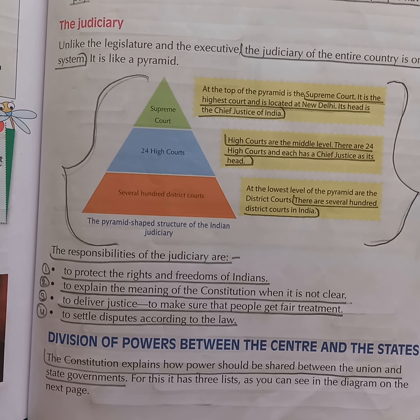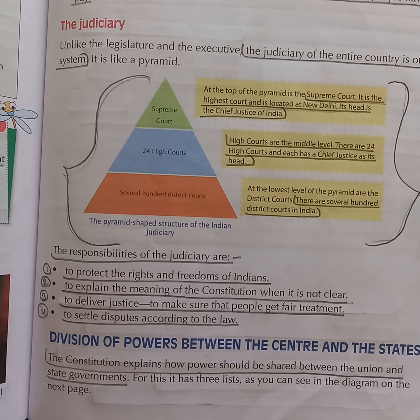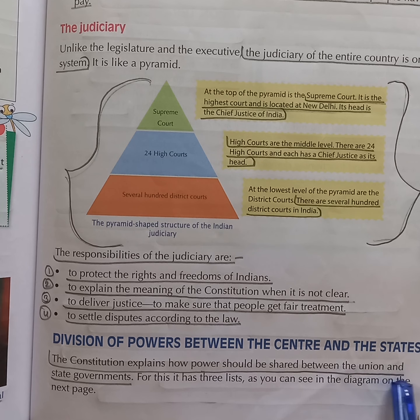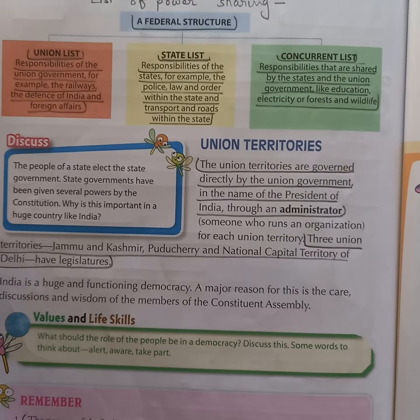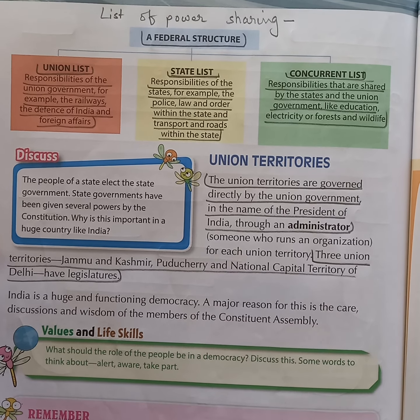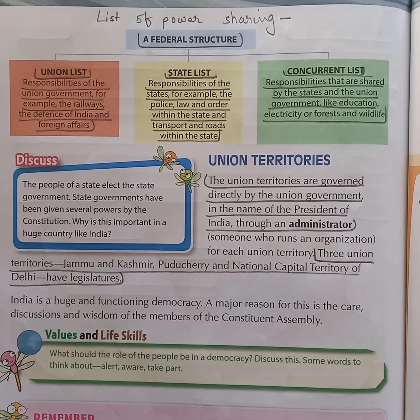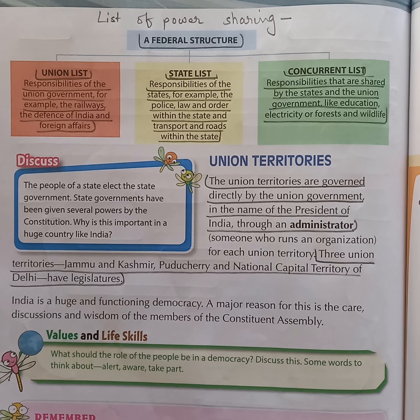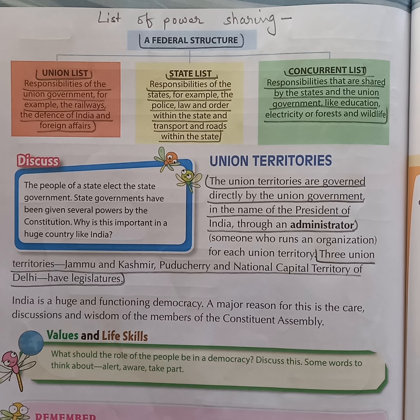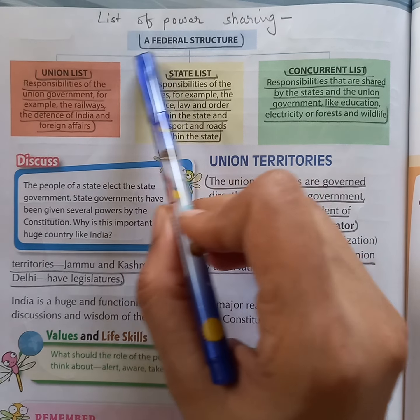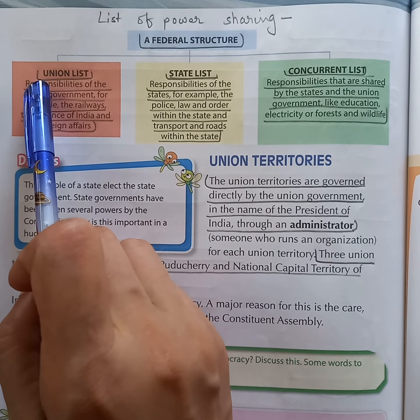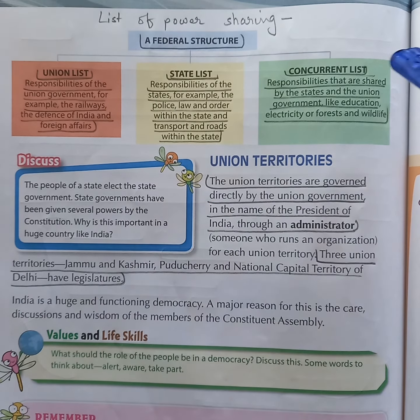Next question: who explains how power should be distributed between the Union Government and the State Government? Answer: the Constitution explains how power should be shared between the Union and the State Governments. What are the three lists in a federal structure according to which power is shared? Answer: in a federal structure, power is shared according to the Constitution on the basis of three lists — the Union List, the State List, and the Concurrent List.